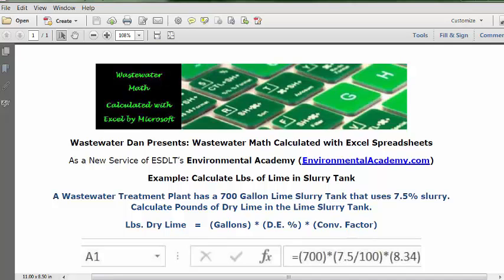Today's problem reads: a wastewater treatment plant has a 700 gallon lime slurry tank that uses 7.5% slurry. Calculate pounds of dry lime in the lime slurry tank.